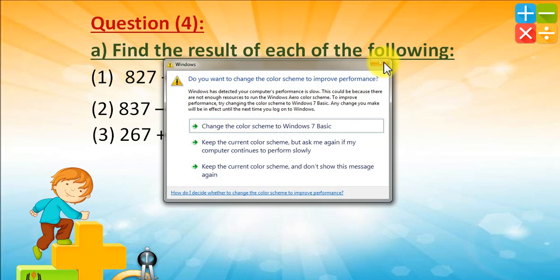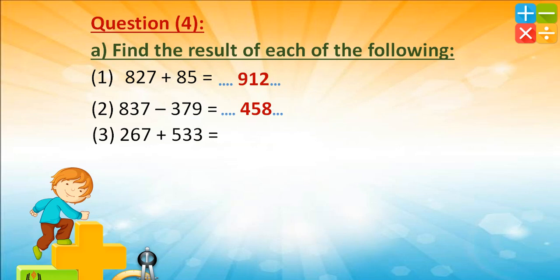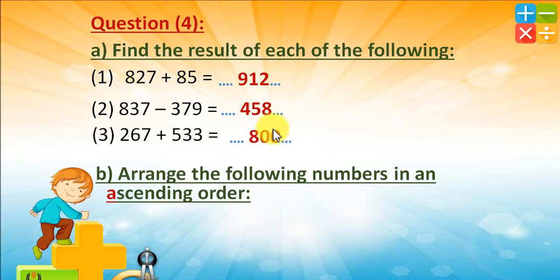267 plus 533: 7 plus 3 equals 10, zero carry 1; 1 plus 6 equals 7, 7 plus 3 equals 10, zero carry 1; 1 plus 2 equals 3, 3 plus 5 equals 8. The result is 800. Well done!